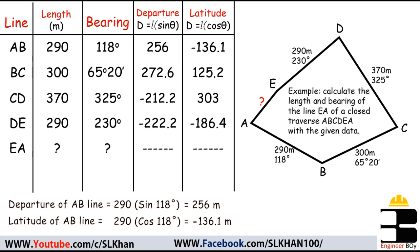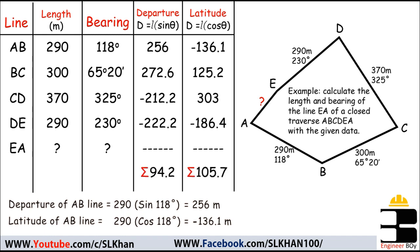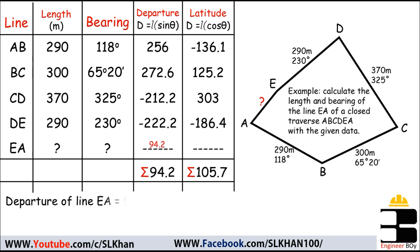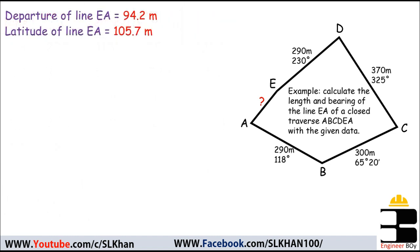Once we get the departure and latitude of all lines, the summation of these values is calculated, which is then taken as the departure and latitude of the missing line EA. So the departure of line EA equals 94.2 meters and the latitude of line EA equals 105.7 meters.